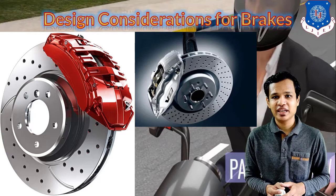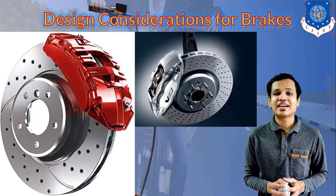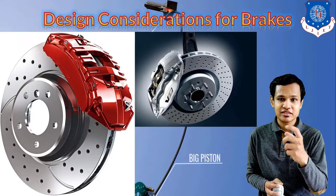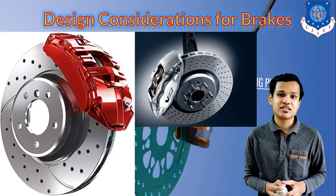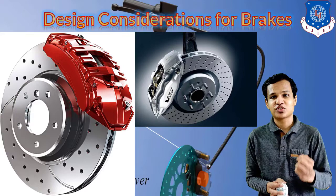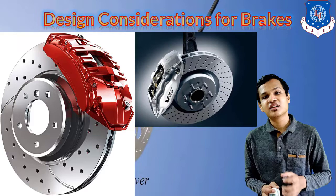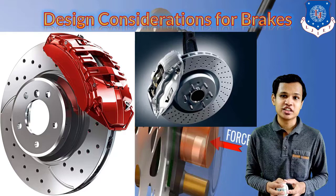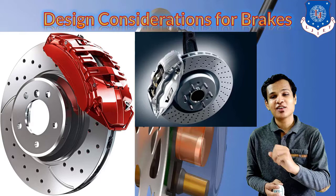The last consideration is stopping distance — how much the vehicle travels after we apply the brakes. Once the brakes are applied, the vehicle should come to a stop within a certain distance, and that distance is known as the stopping distance. That value will be fixed before designing the brake, specifying in how much distance the vehicle needs to be stopped. These are the basic design considerations for two-wheeler brakes.